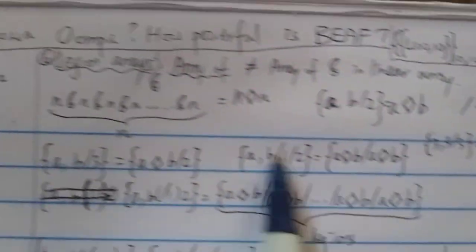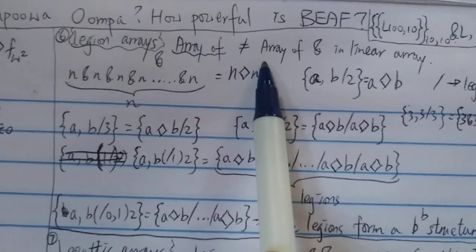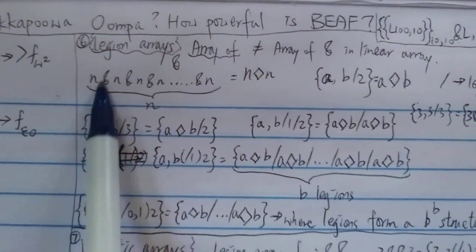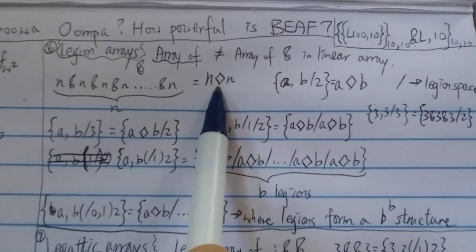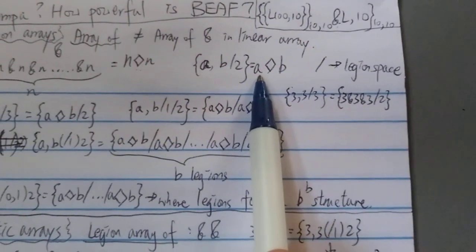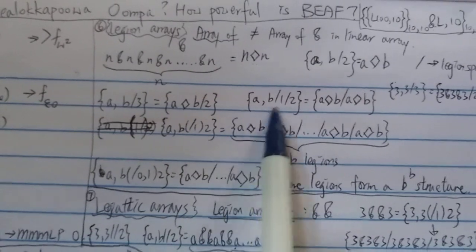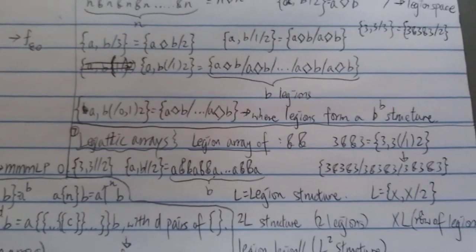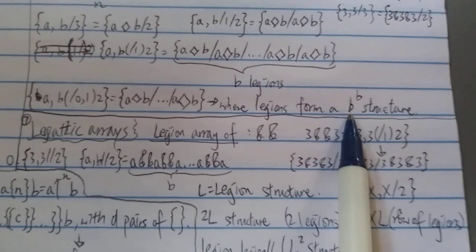Then we finally arrive at the legion arrays — way crazier. This array-of notation does not equal the previous array-of in the linear array notation. We can define something like n & n & n & n with n number of n's using a new notation: {n ⊕ n}, written as {a,b / 2} equals {a ⊕ b} — a 'legion space.' This means with b number of legions, and you can extend it into a b-to-b structure.